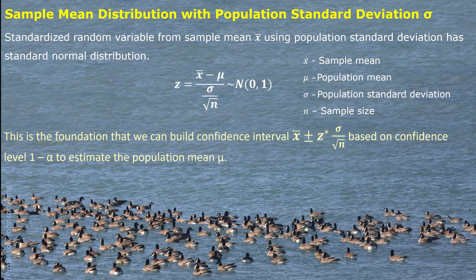The basic notation is x-bar representing sample mean, mu represents population mean, sigma is population standard deviation, and the lowercase n is sample size. The basic idea is a simple random sample. We use the mean as the center, and with this center we build up a confidence interval to tell about the population mean.